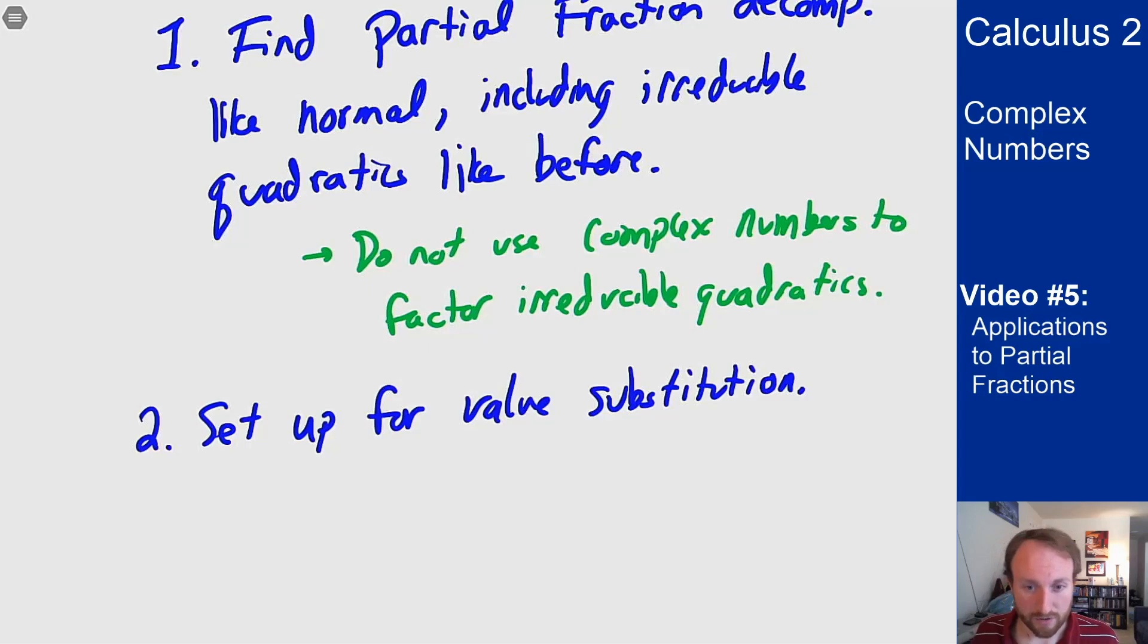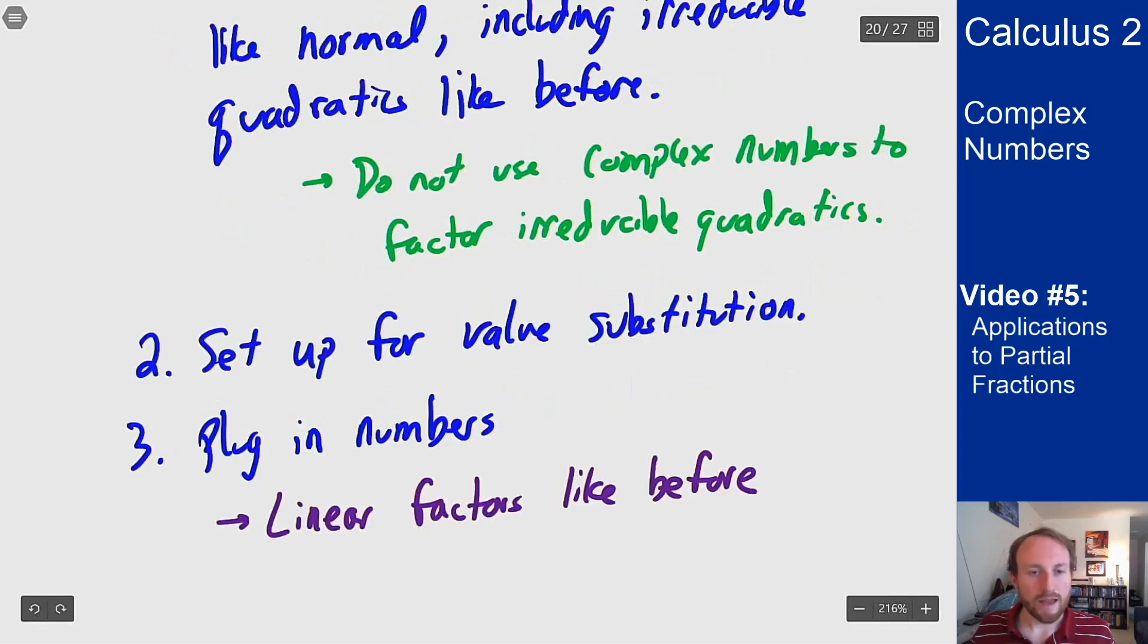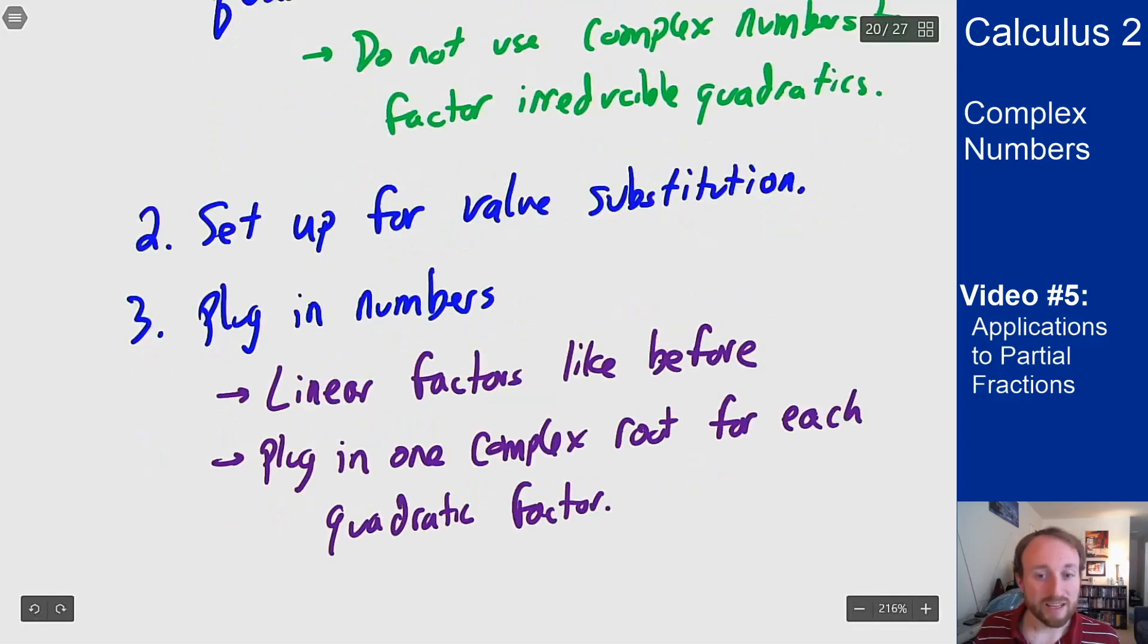Now we're going to start plugging in numbers. We're going to plug in the numbers for the linear factors like before and then for the quadratic factors we're going to plug in only one of their two complex roots. I only need one of the roots here because I will get two equations out of it, one from the real part of the answer, one from the imaginary part of the answer, because complex numbers really have these two parts going on. If they need to be equal as complex numbers I need both the real and the imaginary parts to be equal, that gives me two equations from that root.